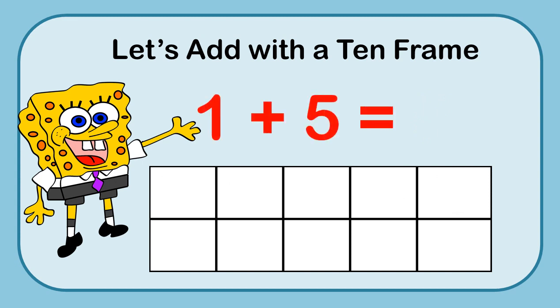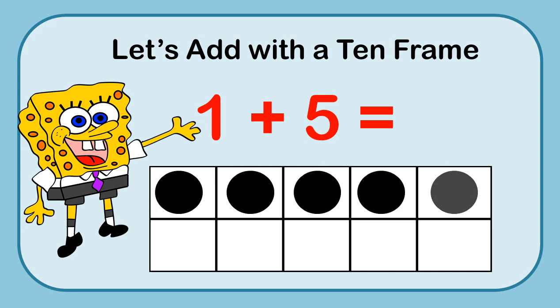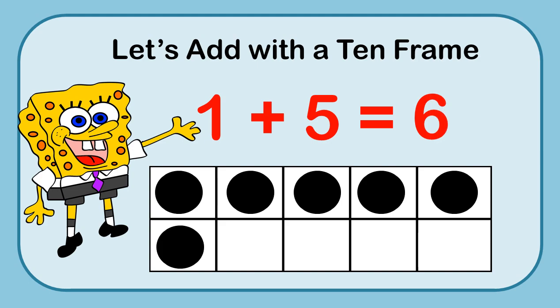Here's another equation: 1 plus 5. I'm going to use one marker, and then put five more markers: 1, 2, 3, 4, 5. I can count them all up one at a time: 1, 2, 3, 4, 5, 6. But I can also see that the first row of the 10-frame already has 5 in it. So I could say 5 and just add that one more, which is 6. Either way, 1 plus 5 equals 6.